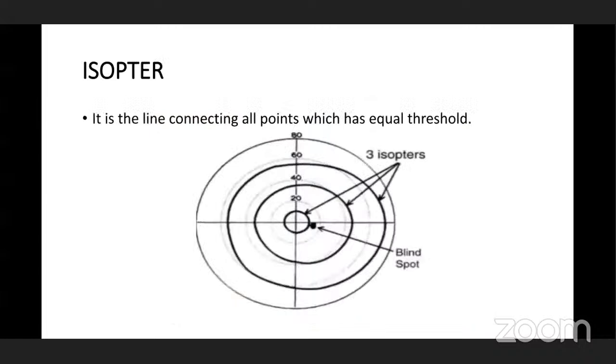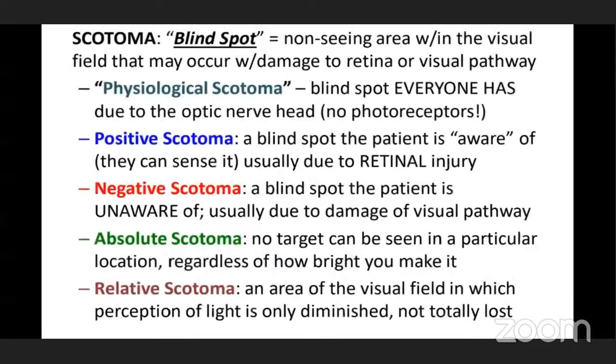Then we have isopter — the line connecting all points that have equal threshold. Next, physiological scotoma is the blind spot everyone has due to the optic nerve head, where there are no photoreceptors like rods and cones. Positive scotoma is a blind spot the patient is aware of and can sense, usually due to retinal injury.